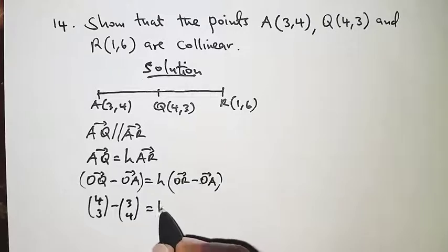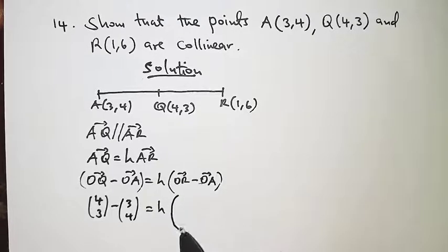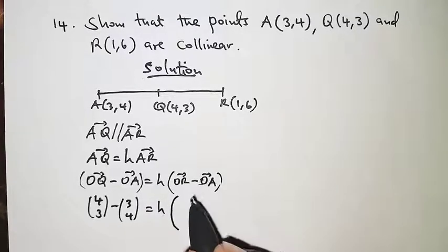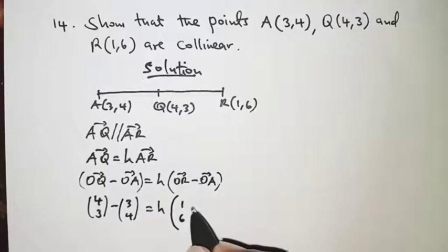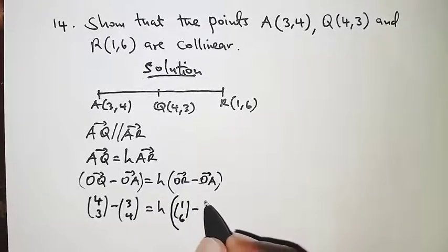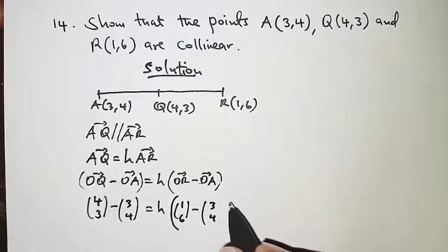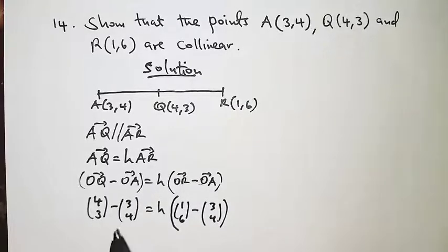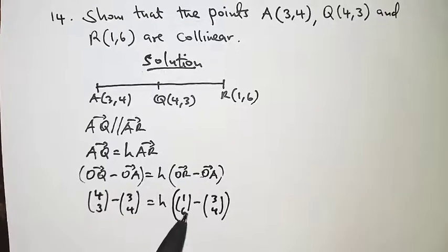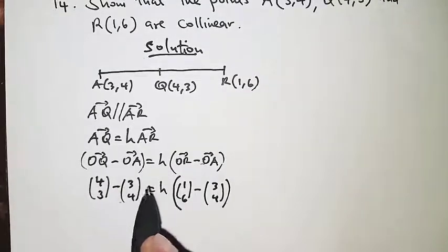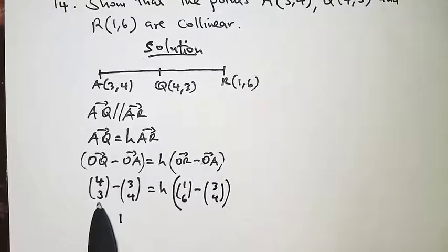And then we'll have h into, and for OR we have (1,6) minus OA, which is (3,4). So what we have here is that 4 minus 3, that should give us 1, and 3 minus 4, that is negative 1.